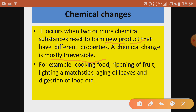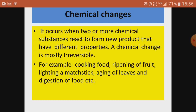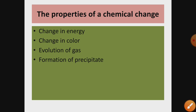Examples of chemical changes include cooking food, ripening of fruit, lighting a matchstick, aging of leaves, and digestion of food. These are some of the examples of chemical changes.